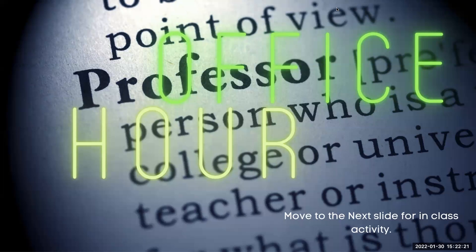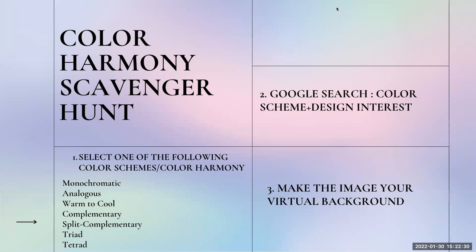If you have any more questions, feel free to sign up for office hours. Go ahead and move to the next slide for our in-class activity. For our activity, we're going to go on a color harmony scavenger hunt. You're going to select one of the themes represented in the lecture and Google search that color scheme plus your specific design interests — the field you're planning on moving into in your second semester. Then make that image your virtual background.